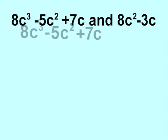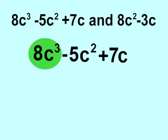Let's rewrite our first expression: 8c cubed minus 5c squared plus 7c. Now, you may feel like matching up the 8c squared with the 8c cubed, but this would be a big mistake. The exponents must match up.